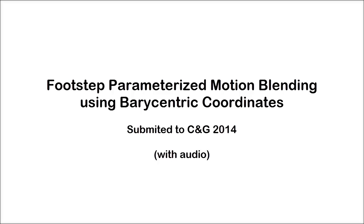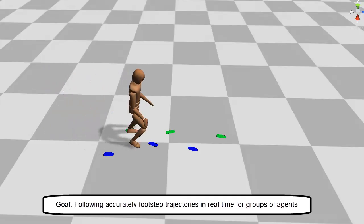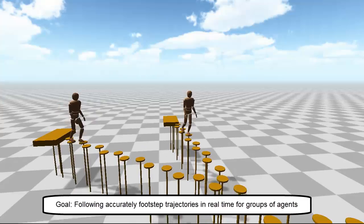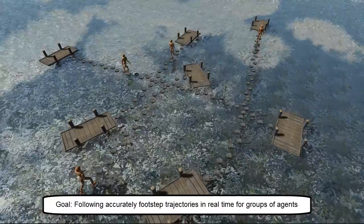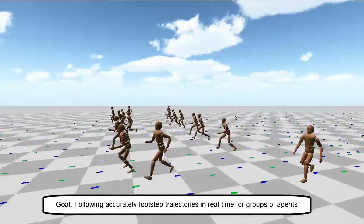Footstep Parameterized Motion Blending Using Barycentric Coordinates. We present a real-time locomotion system for animated characters to follow footstep trajectories for a large variety of human walking and running styles.